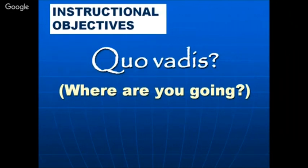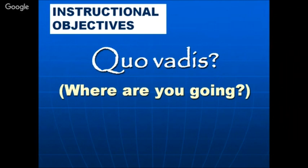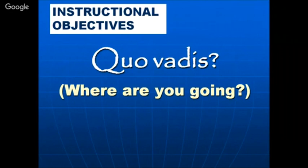Coming to instructional objectives — where are you going? If you are not very clear about where you are going, there is every likelihood you will not reach your destination. If I have to go from here to Delhi and I do not know which road or direction to take, how can I reach my destination? Similarly in the instructional process, if we do not know what the student should be able to do, we will not reach anywhere.